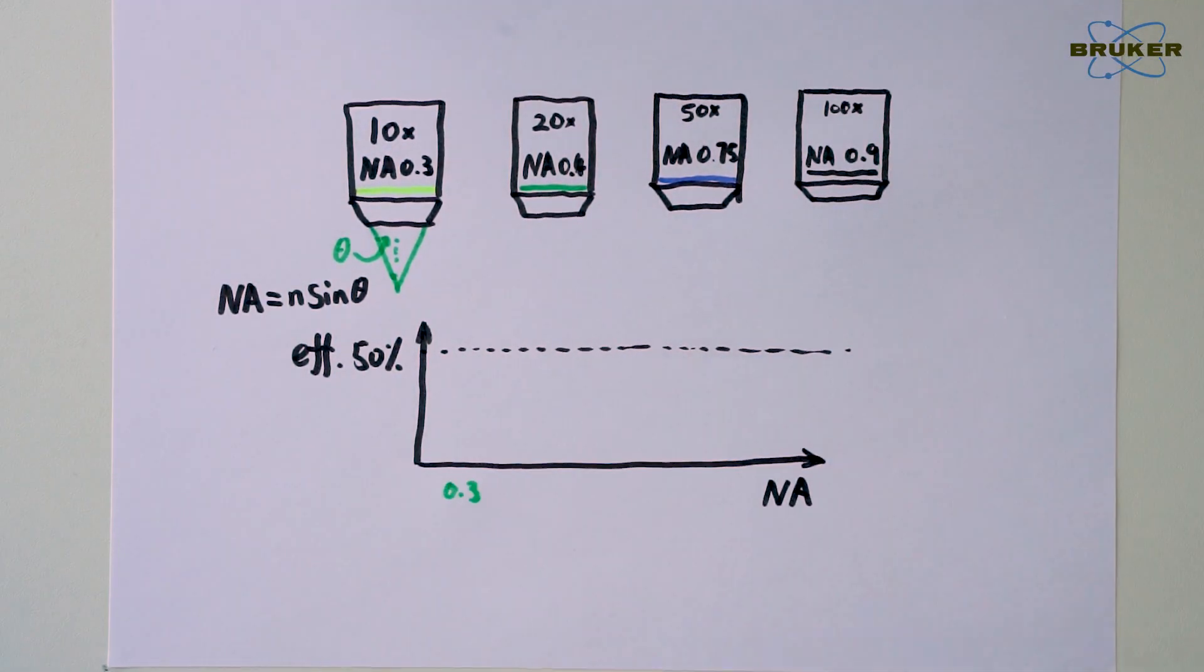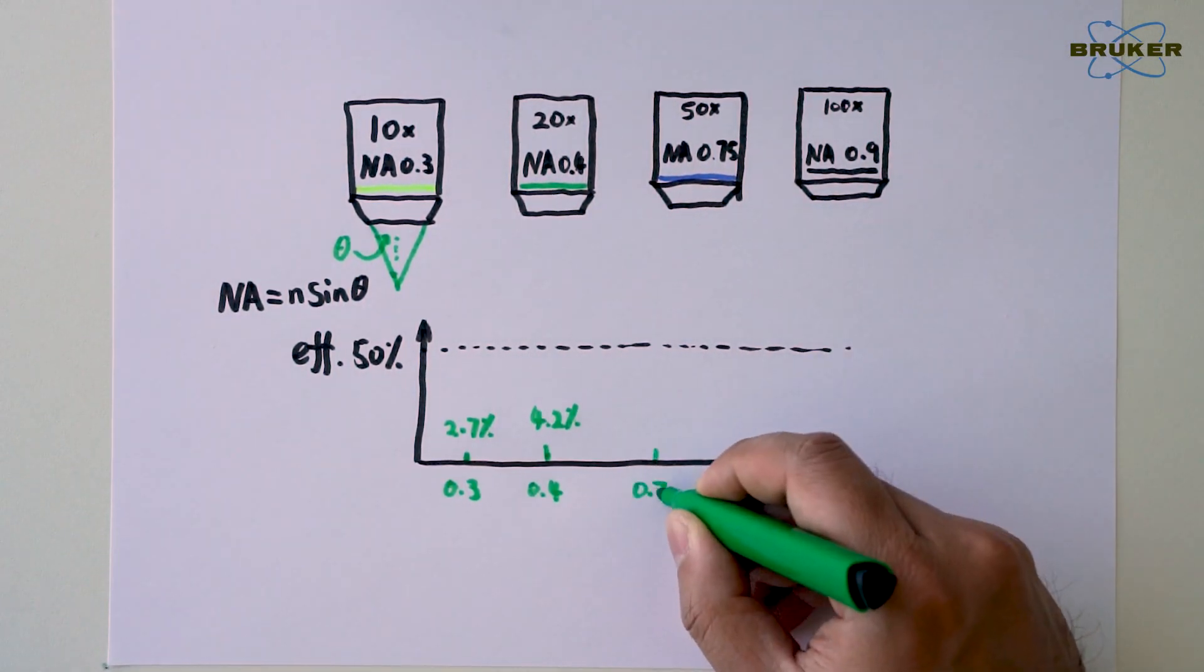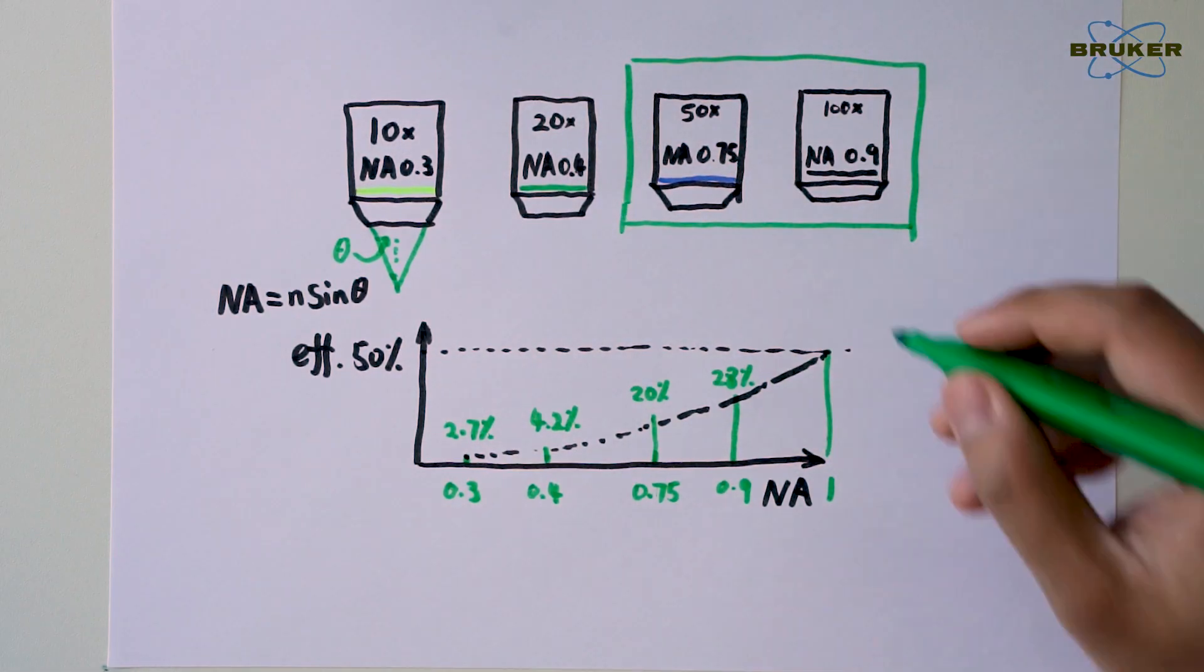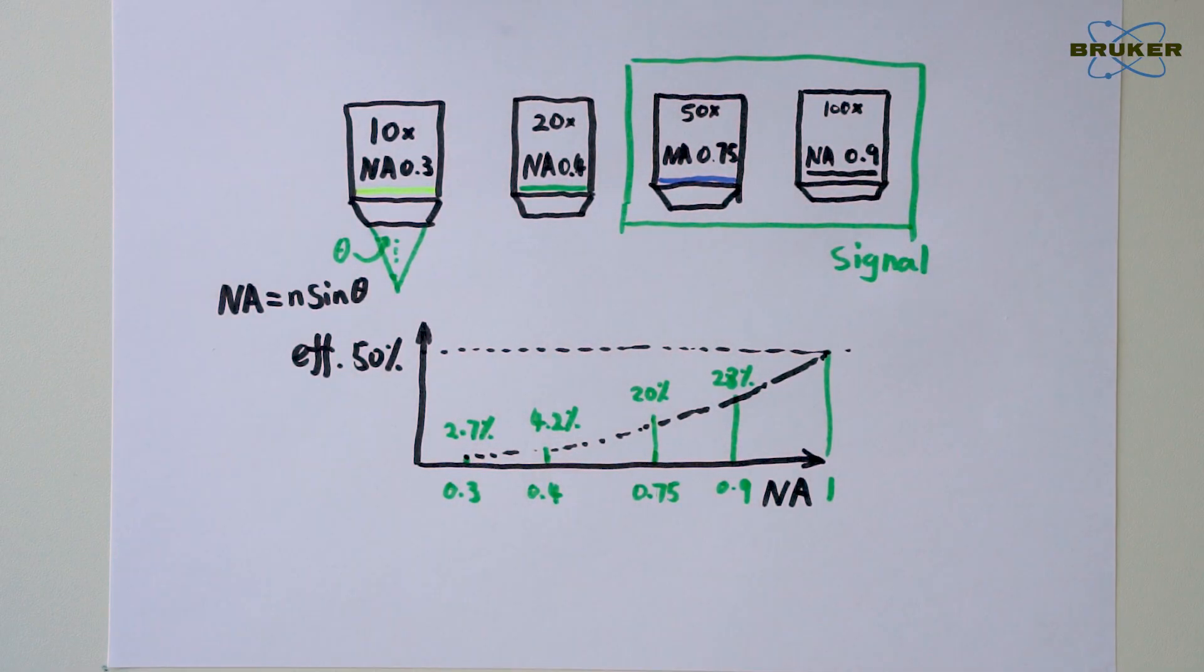These four can collect 2.3%, 4.2%, 20% and 28% respectively. Clearly, we choose objective lens with high NA for the best collection of Raman signal.